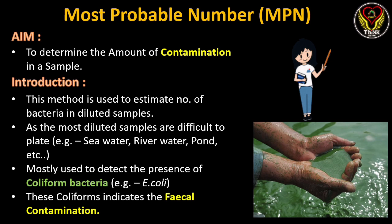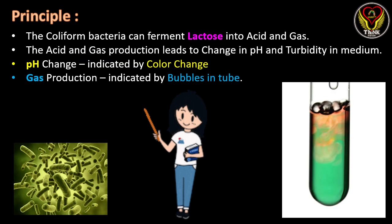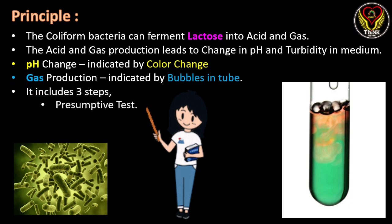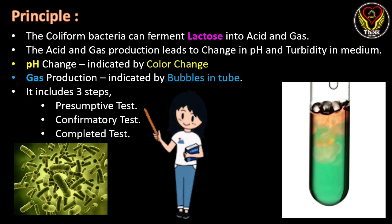The presence of coliform bacteria indicates contamination of the water bodies with fecal samples, so fecal-contaminated water is not suitable for drinking and can be declared as not potable. The main principle of this method is that coliform bacteria can ferment lactose into acid and gas. The lactose sugar is broken down into acid, and in this process gas is also produced. The pH drop can be indicated by a color change in the medium, and gas production can be identified visibly by observing bubbles in the tubes.